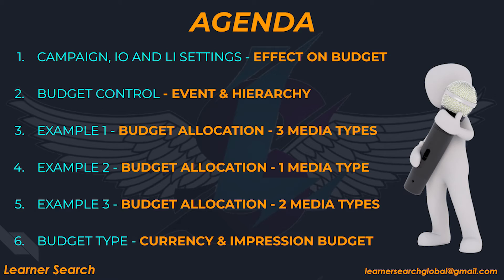In example 1, budget allocation between 3 media types. In example 2, budget allocation for 1 media type with multiple creatives. And example 3, budget allocation with 2 media types. Finally, I will explain budget type in DV360 — currency and impression budget types.